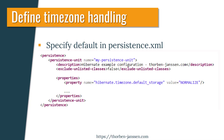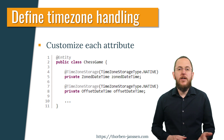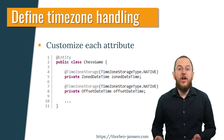In Hibernate 6, you can define the timezone handling in 2 ways. You can specify a default handling by setting the configuration property hibernate.timezone.defaultStorage in your persistence.xml. The TimezoneStorageType enum defines the supported configuration values, which I discuss in more detail in the following section. You can customize the timezone handling of each entity attribute of type ZonedDateTime or OffsetDateTime by annotating it with @TimezoneStorage and providing a TimezoneStorageType enum value.